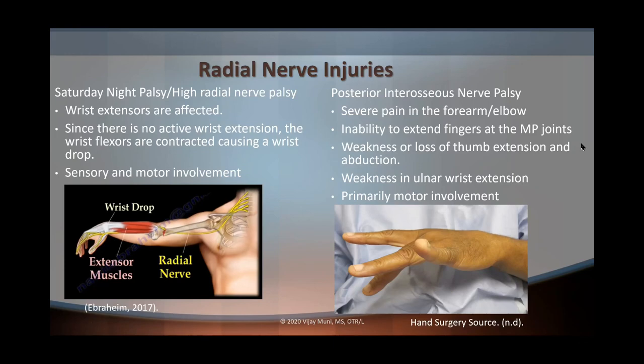The first condition we're going to talk about is Saturday night palsy. With Saturday night palsy, the wrist extensors are affected — remember the radial nerve affects the extensors such as your wrist and your fingers. So if there's Saturday night palsy and the wrist extensors are paralyzed, there's no active wrist extension. Your wrist flexors are going to activate and flex your wrist, which is why the person may have a wrist drop associated with Saturday night palsy. There's also sensory and motor involvement.